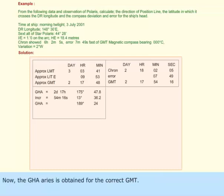GHA Aries is obtained for the correct GMT. Add or subtract longitude to get the LHA Aries.